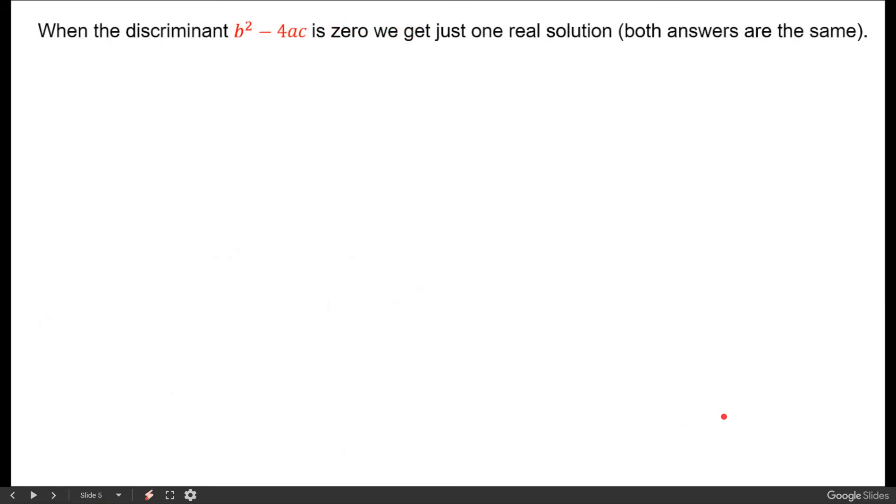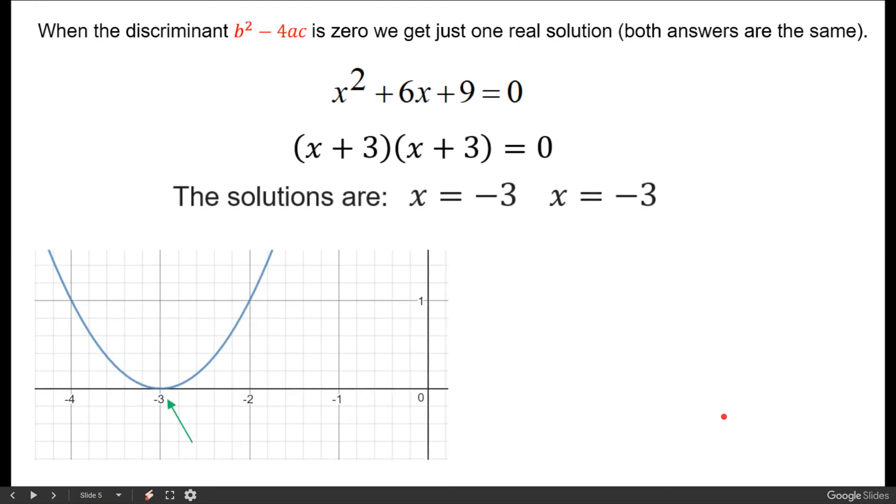Now when the discriminant is 0 we're going to get just one solution or both answers end up being the same. Here's an example. In this case when we factor we get x equals negative 3 and x equals negative 3.